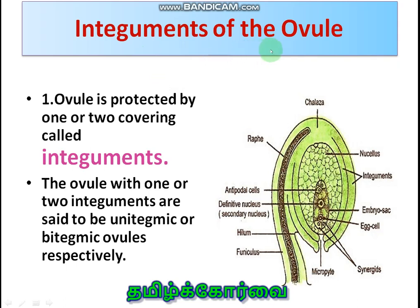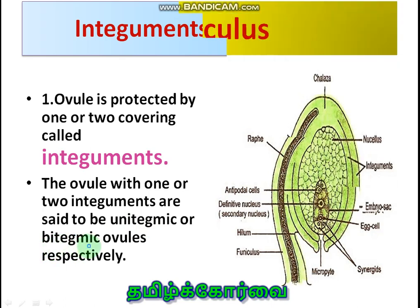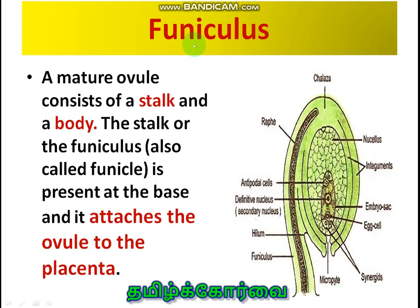First one is the integuments of the ovule — it is the outer covering. The entire ovule body is covered by the integument. There may be one or two integuments: if one integument it is unitegmic ovule; two integuments it is bitegmic ovule.